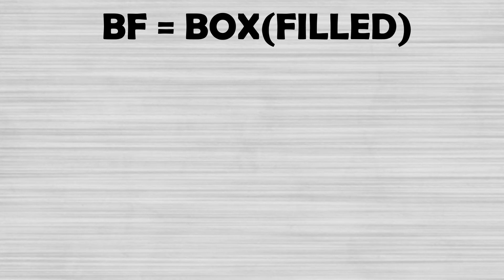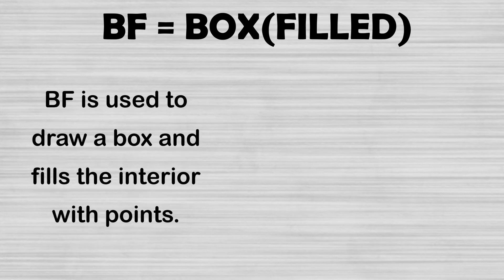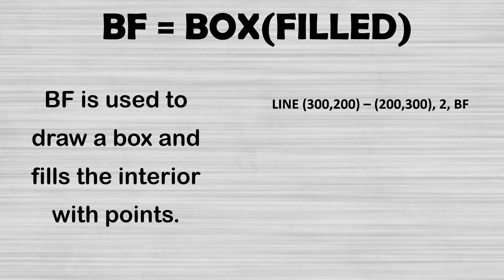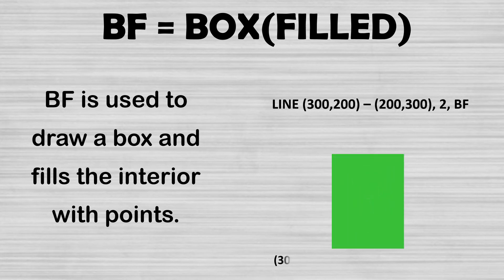The next thing in the syntax is BF. It doesn't stand for 'best friend' — BF is used to draw a box and fill the interior of the box with points. For example: LINE 300,300 TO 200,300, 2 means a green colored filled box, and BF means the box will be filled with points. This green colored box will be drawn on the screen with the coordinates of the opposite corners.